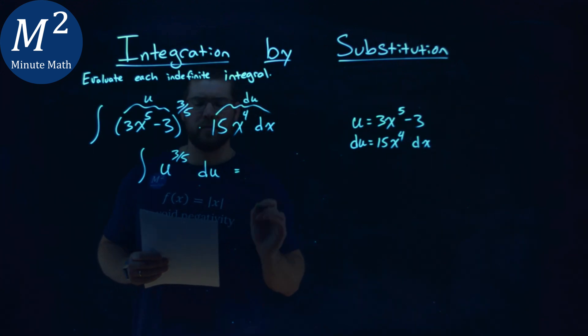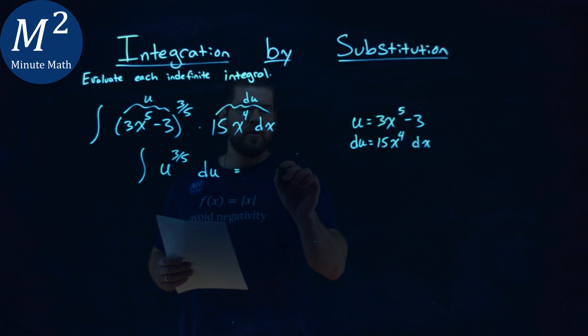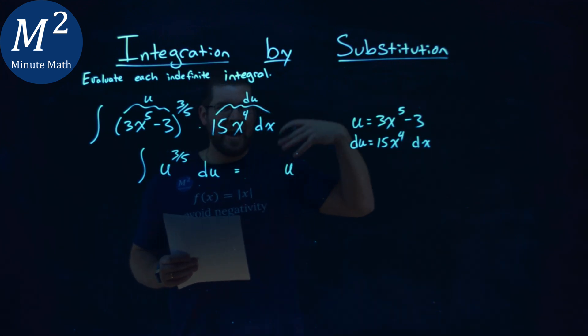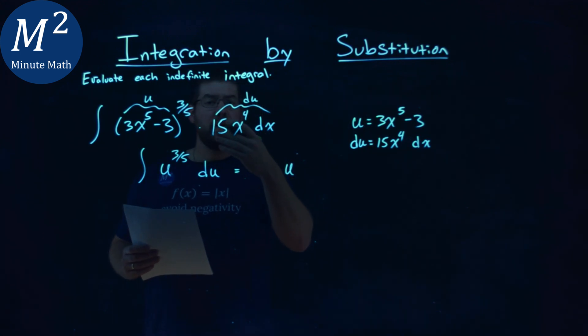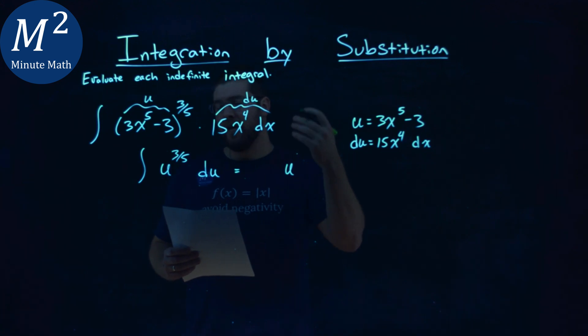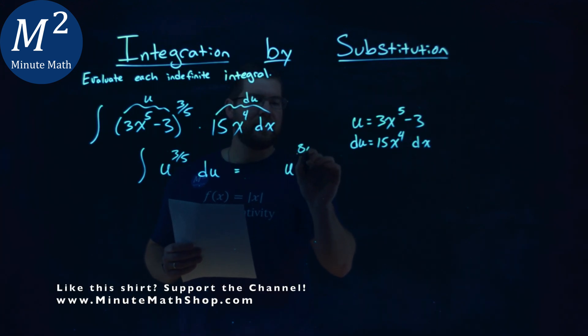So let's go use our power rule here. We take u, and we'll raise that to, well, we add 1 to the exponent. So 3 5ths plus 1, or 5 5ths, is 8 5ths.